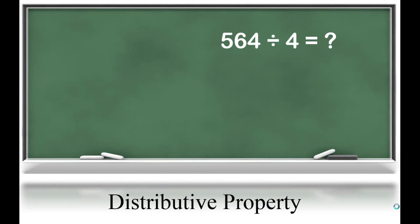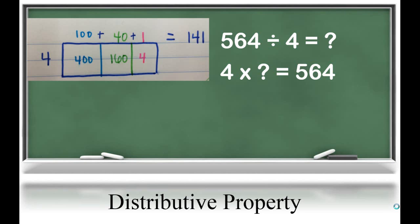The first strategy that we are going to look at is the distributive property. To use the distributive property, students need to rely heavily on their understanding of multiplication, because multiplication is the inverse of division. If we look at our division problem, 564 divided by 4, students need to think 4 times what number equals 564? Let's look at a model to help us figure this out. So, this model is an array, or a box model,